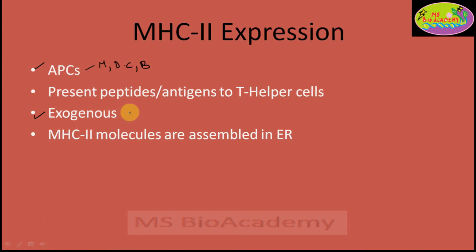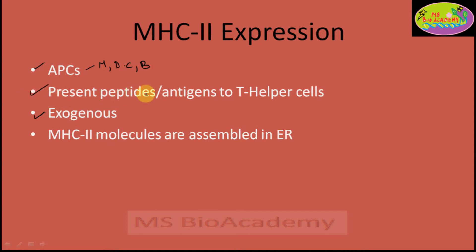These APCs are mainly phagocytic cells and they mainly recognize and internalize exogenous antigens — those pathogens which are present outside the cell. Since APCs have a phagocytic nature, they are going to phagocytose or eat up these exogenous antigens, and then these antigens will be presented to the T helper cells.